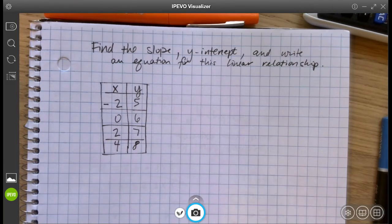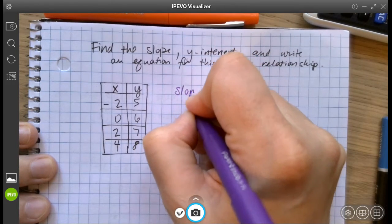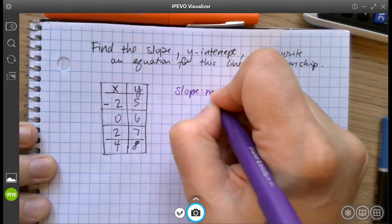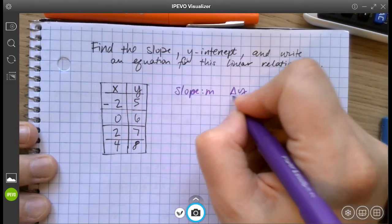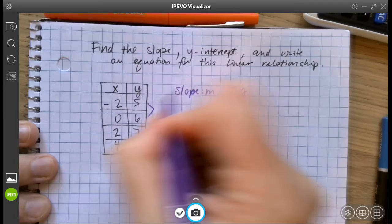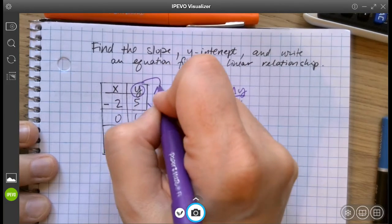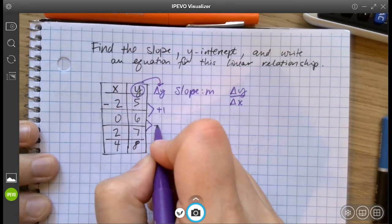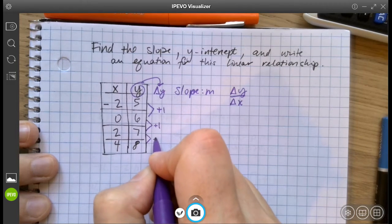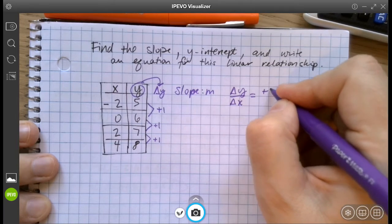So the first thing we're going to do is slope. Remember that slope is m, which is change in y divided by change in x. The y is going up by 1, this is your change in y. It's going up by 1 every time, so the change in y is plus 1.